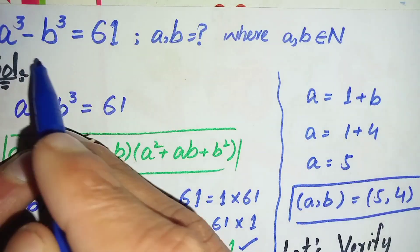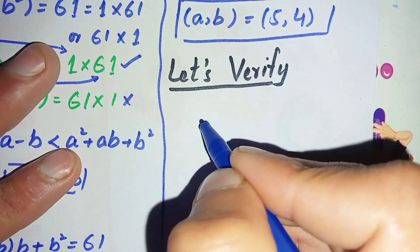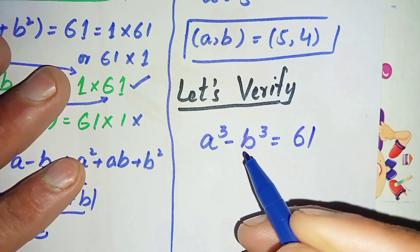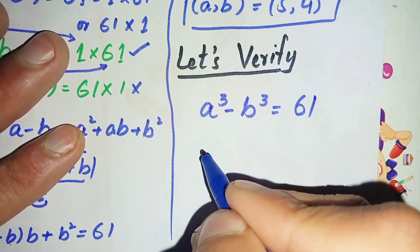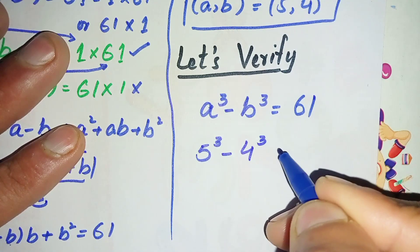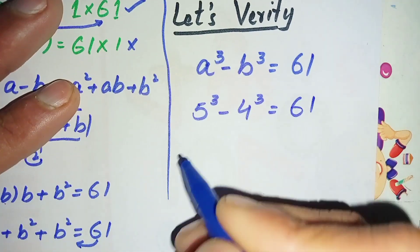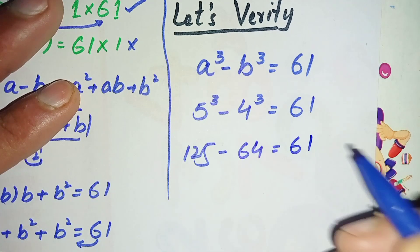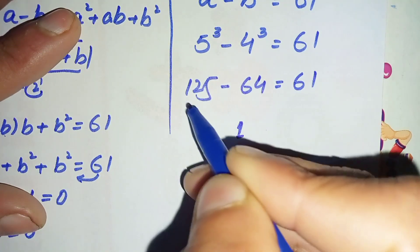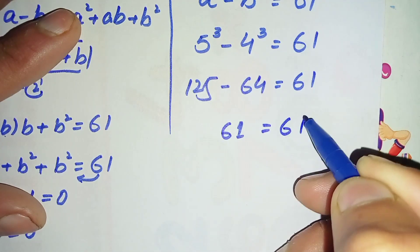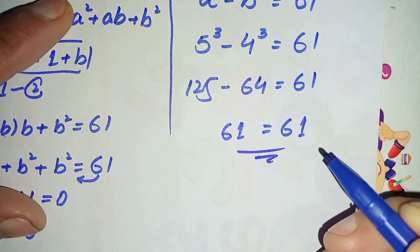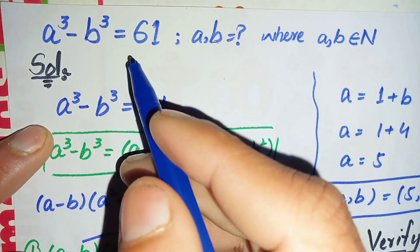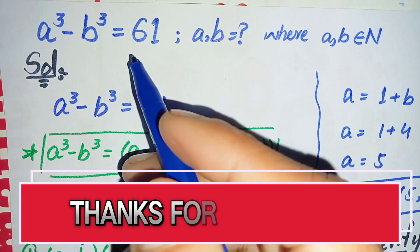Let's verify: substituting a equals 5 and b equals 4 into a cube minus b cube: 5 cube minus 4 cube equals 125 minus 64 equals 61. Since both sides are equal, a equals 5 and b equals 4 are the exact and correct values. If you like this video, don't forget to subscribe to my YouTube channel. Thanks for watching.